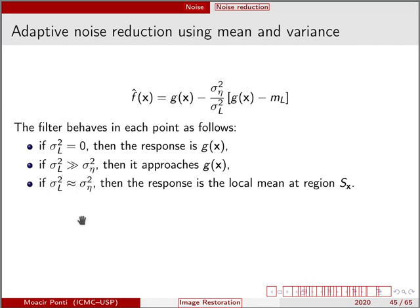And then when we have a local value of variance that's similar to what we expect the noise to be, then we are going to filter it out by taking a local mean at the region s of x.